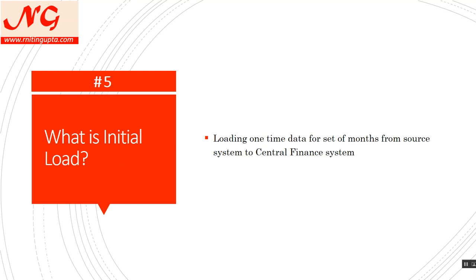Initial load is the loading of mass data from a past period into CFin when the project starts. For example, if your CFin project goes live on August 1st and your fiscal year runs January to December, your business wants full-year reporting from one system. So from January to July 31st you load all data in one shot — this is the initial load. From August 1st when go-live happens, you start replication, and day-by-day documents posted in ECC move to Central Finance in near real-time.